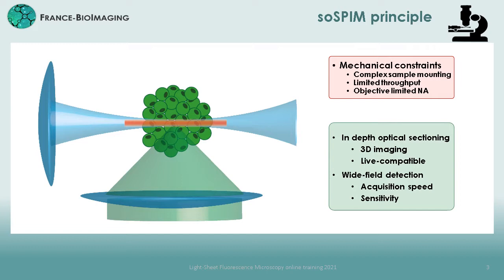However, this multi-objective architecture comes with important mechanical constraints. On one side, it complexifies the way to mount samples in between the objectives and thus limits the potential imaging throughput. On the other side, it prevents the possibility to use high numerical aperture objectives, which are usually bulkier, and hence limits the resolution and the overall sensitivity of the system.